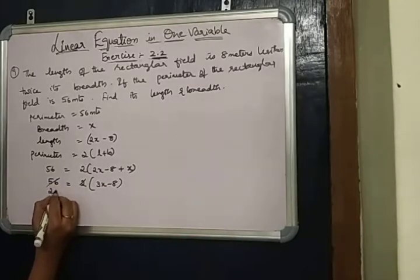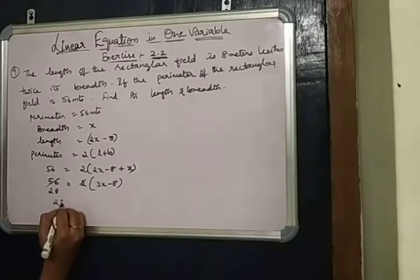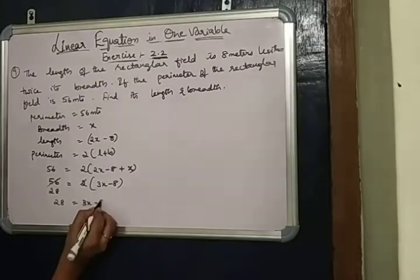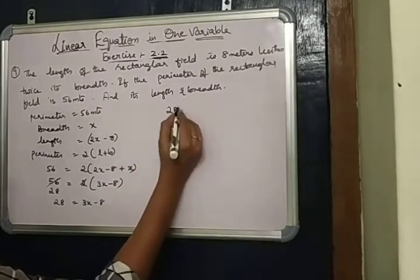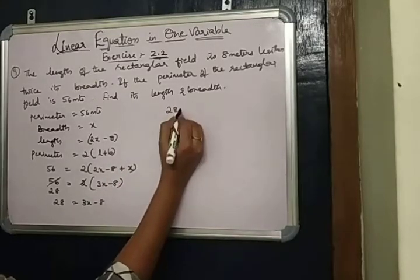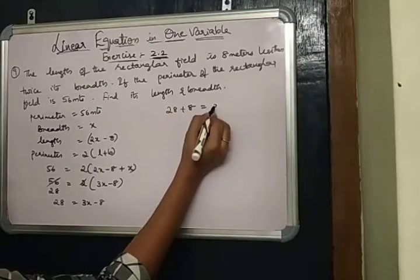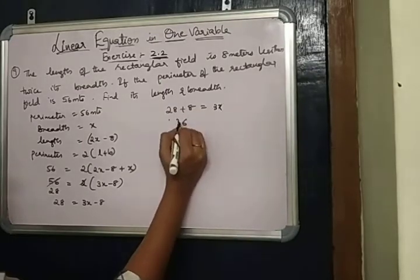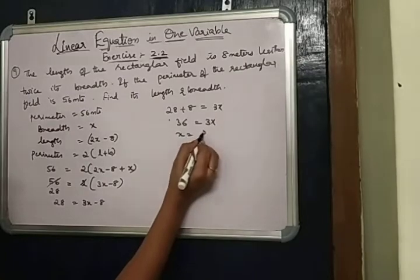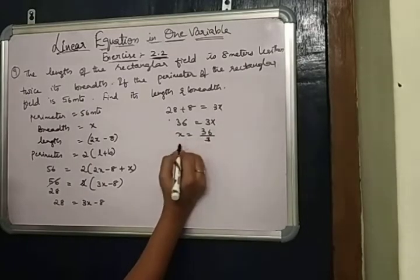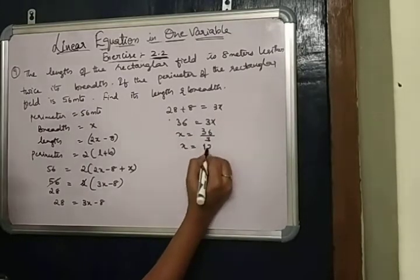2 times 8 is 16, so 28 is equal to 3x minus 8. When 28 plus 8 comes to left hand side it becomes plus 8, so 36 is equal to 3x, where x is equal to 36 divided by 3, x is equal to 12.